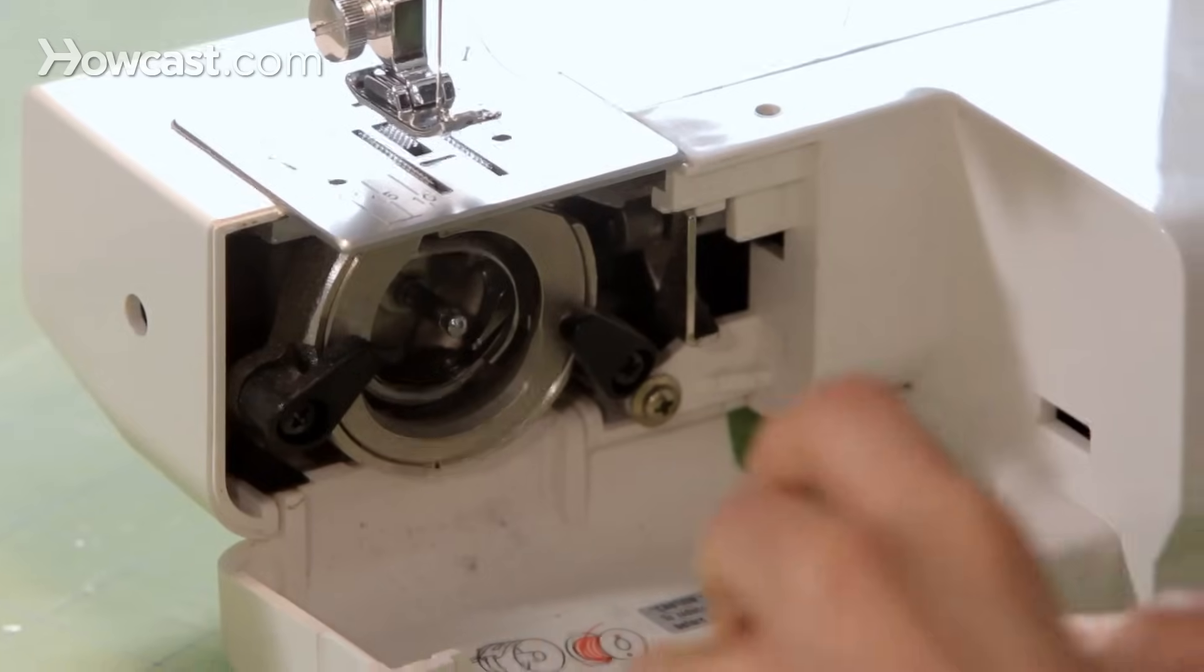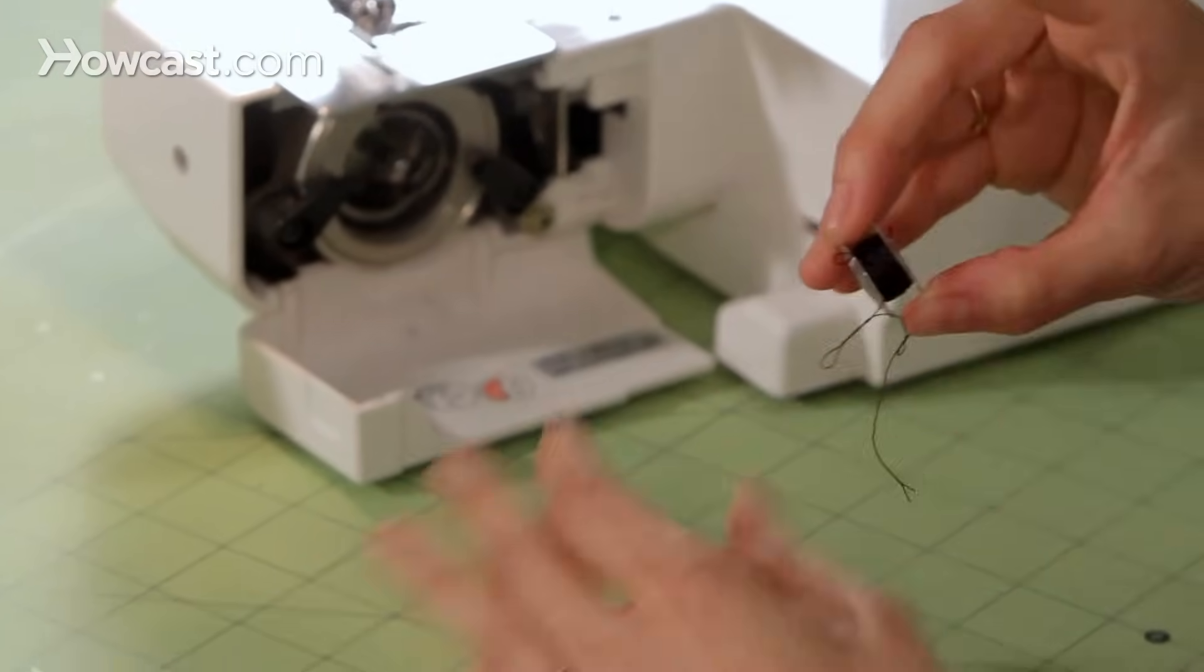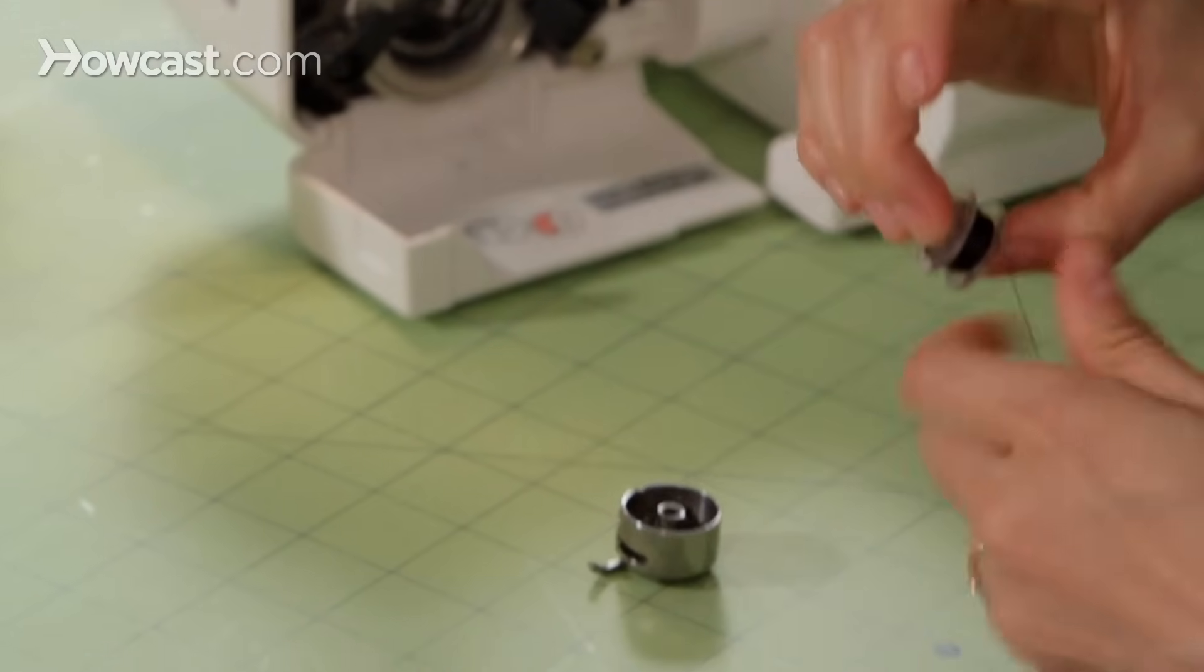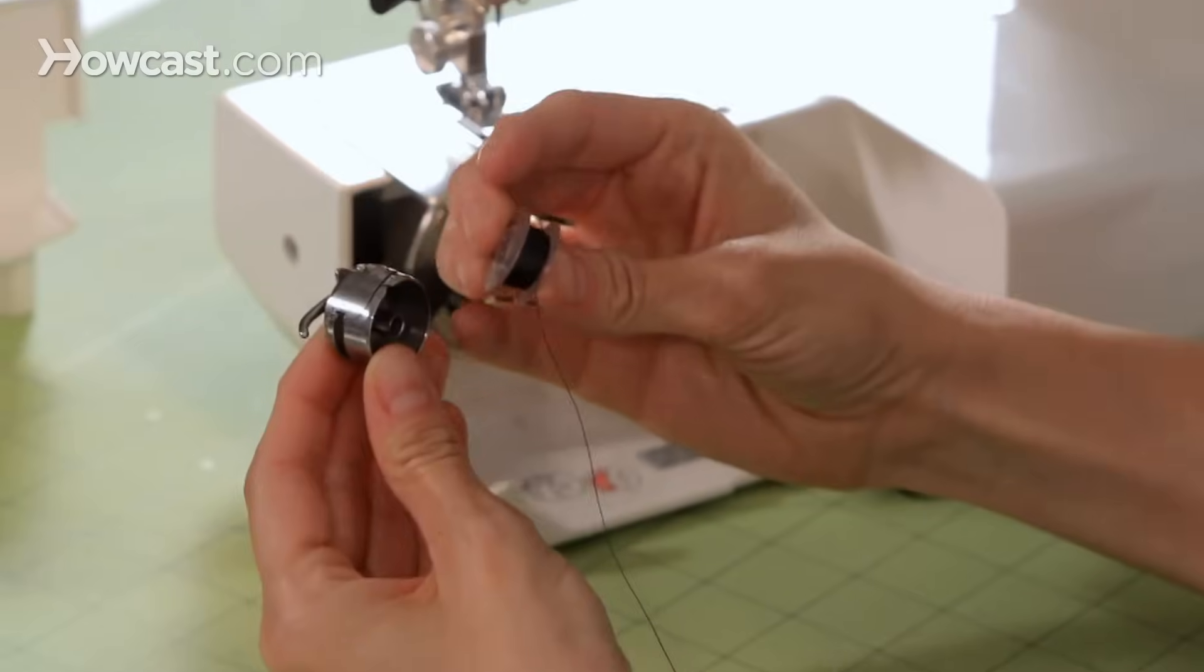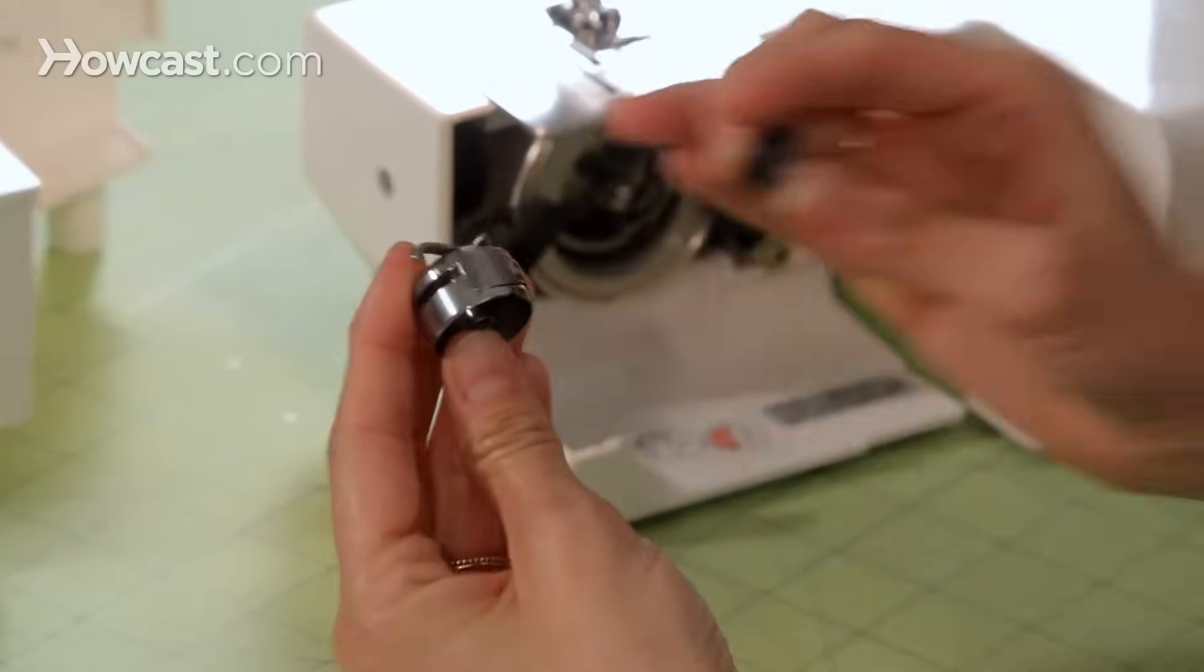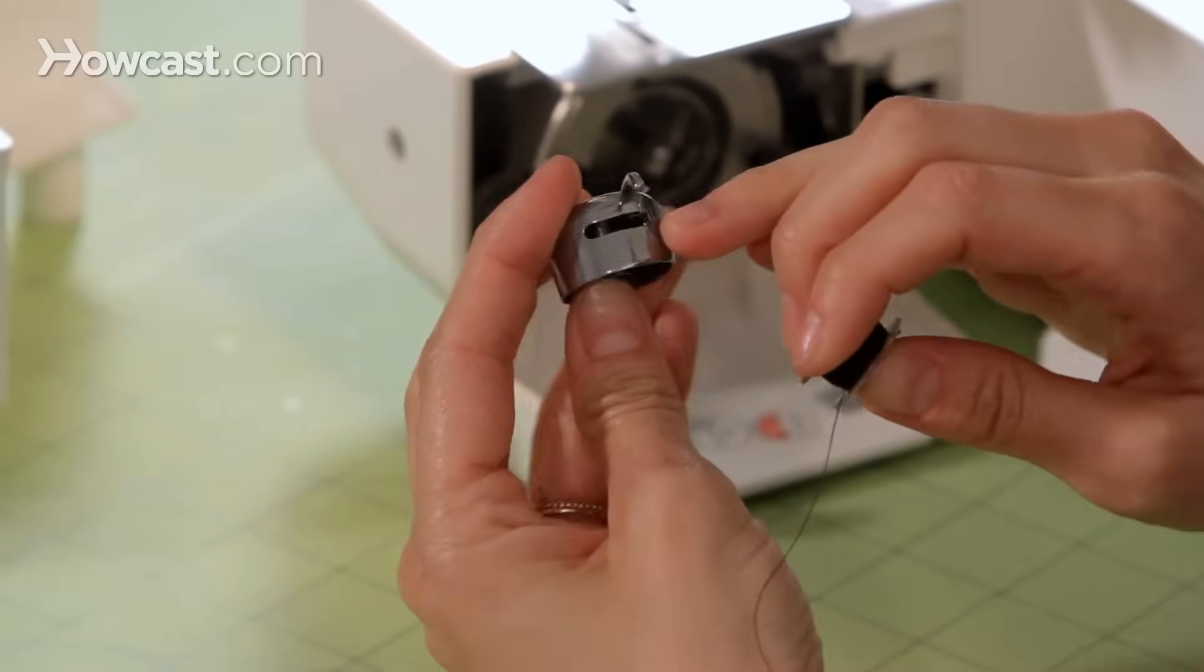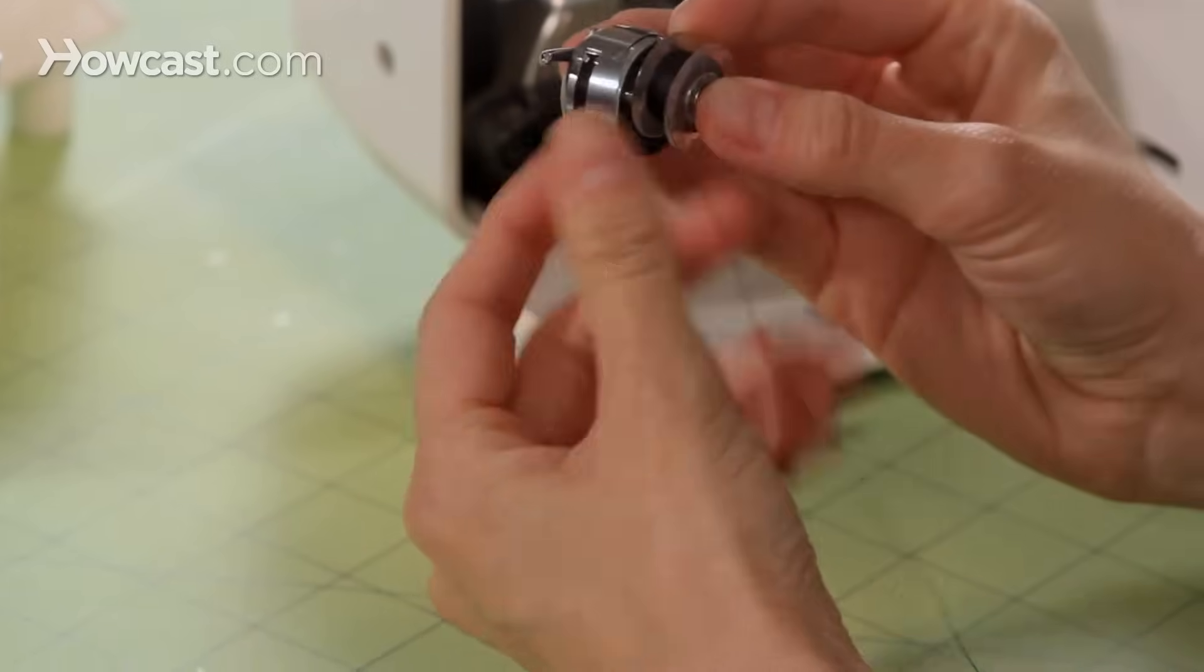Another problem is you might be threading the bobbin in the casing incorrectly. I always like to just think of everything logically. What makes sense? Our groove in our bobbin case is going to the left and our thread is coming out to the left. Everything is going to the left. So when we put our bobbin in our case, our thread should also be going to the left.